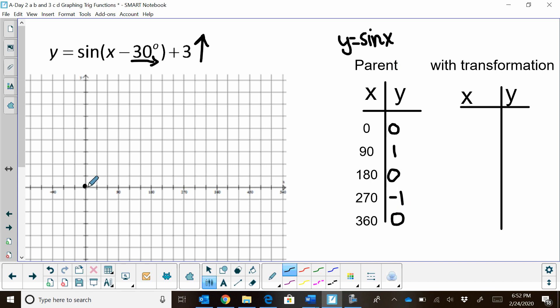I'm going to sketch the parent graph. So we start at 0, 0, and at 90 we're at 1. At 180 we're at 0. At 270 we're at negative 1, and at 360 we're back to 0. I'm just going to sketch this with dotted lines just so you can see it as a reference. And of course it's continuous, it goes left to right forever.